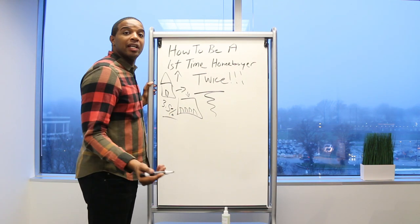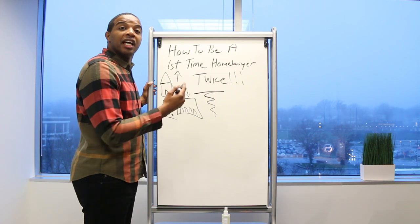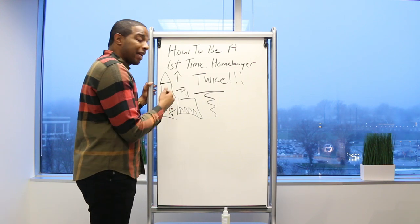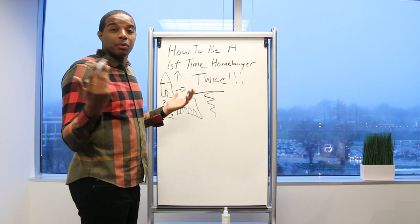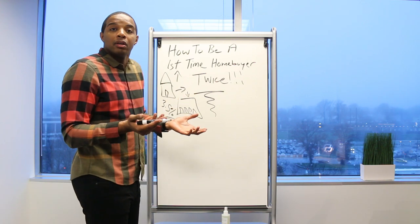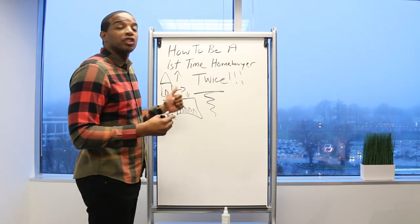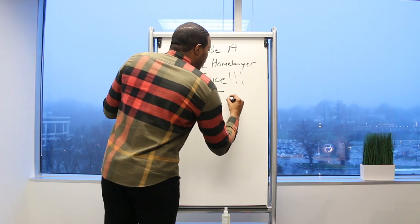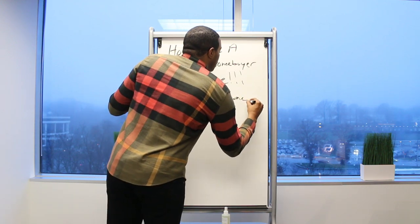You can then go get another two single family or four family FHA three and a half percent down, even though it's your second home, and you can do that again and again. FHA changes their program or guidelines, or any bank for that matter. It's not about it being a first-time homebuyer.